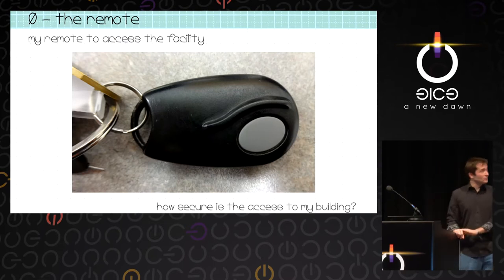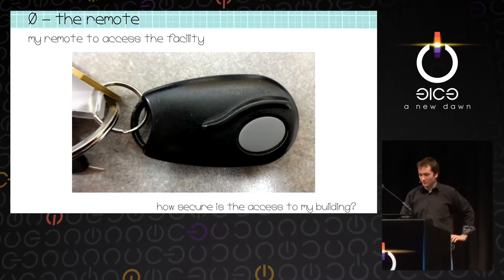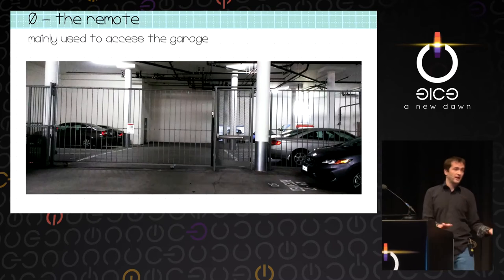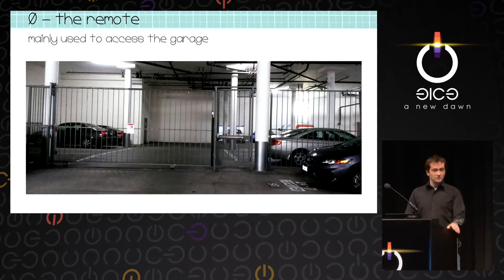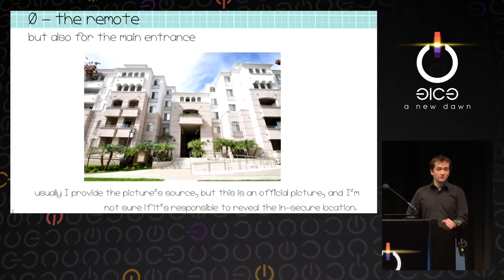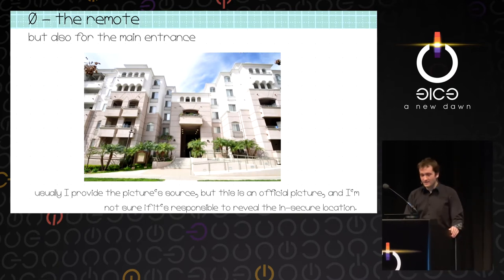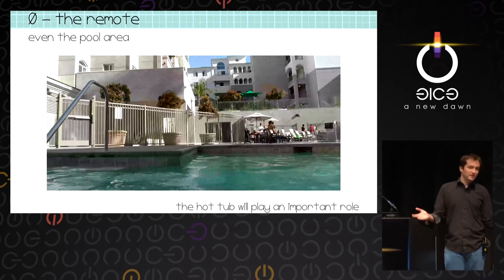I looked at this remote — I was in the US for a couple of months, and they gave me this remote to access my building. They gave it to everyone, and I wanted to know how secure this access gate was. The remote is used for the garage; in the US you're almost forced to have a car because public transport is not that good. They also give it to access the main entry — nobody uses it, but it's still there. And importantly, they give it to access the pool area. I find it a bit stupid that it's fenced, but it's fenced.